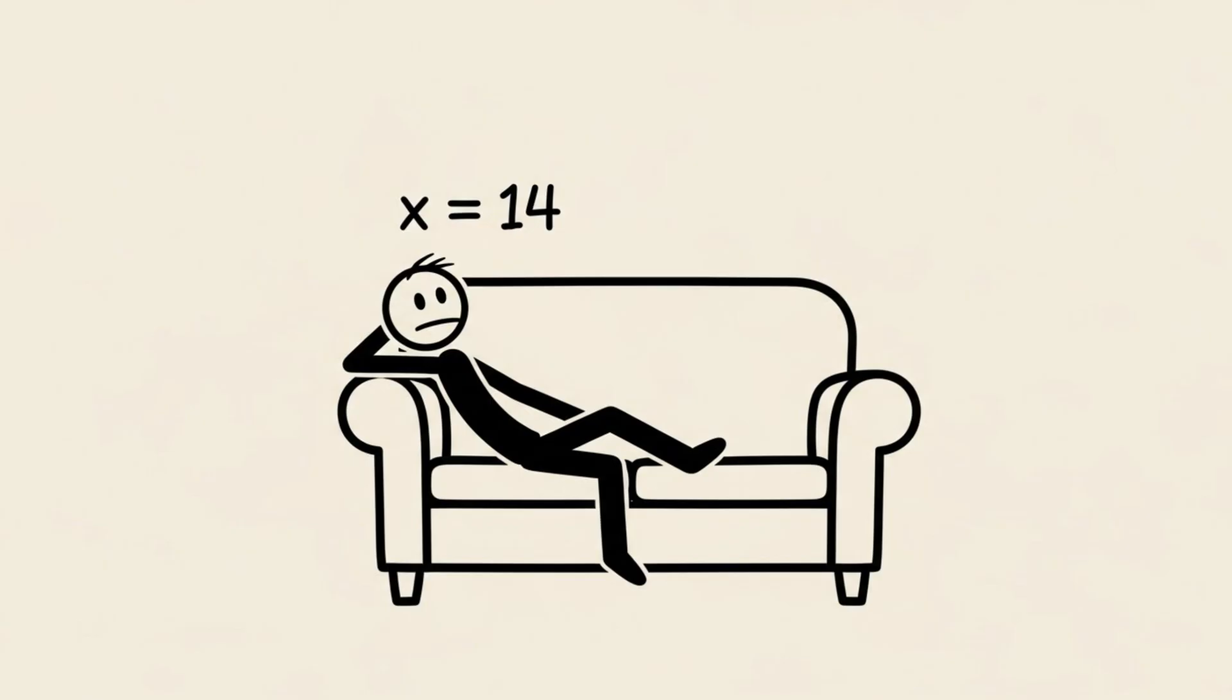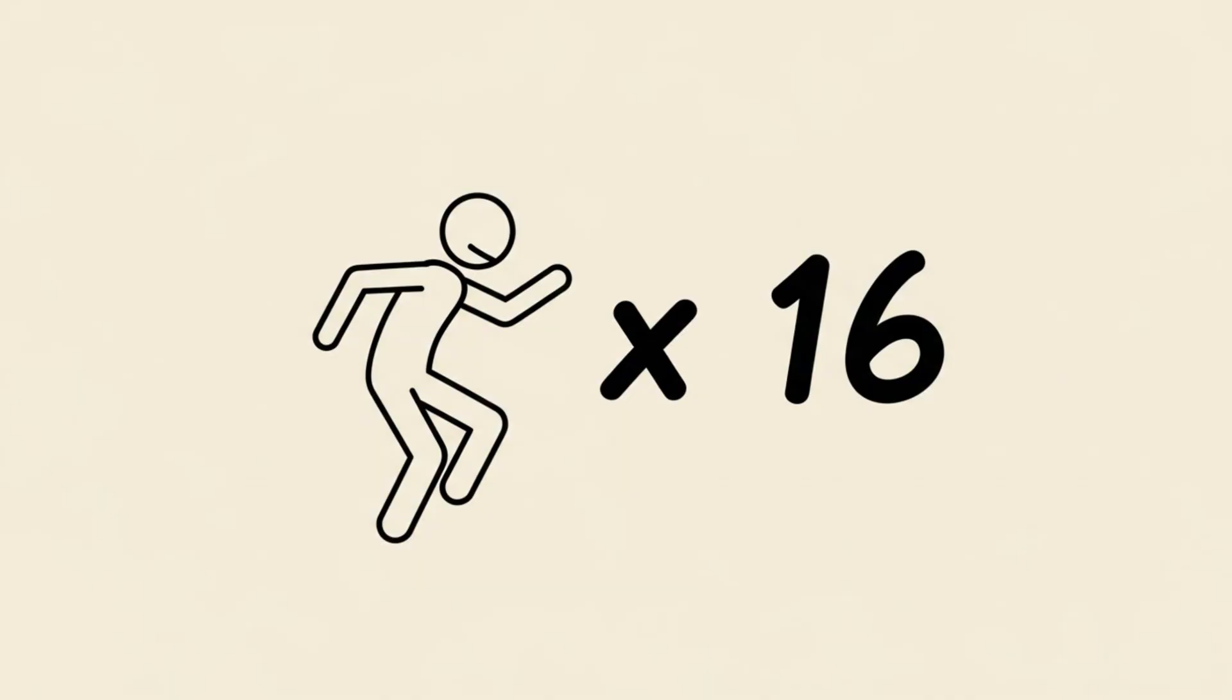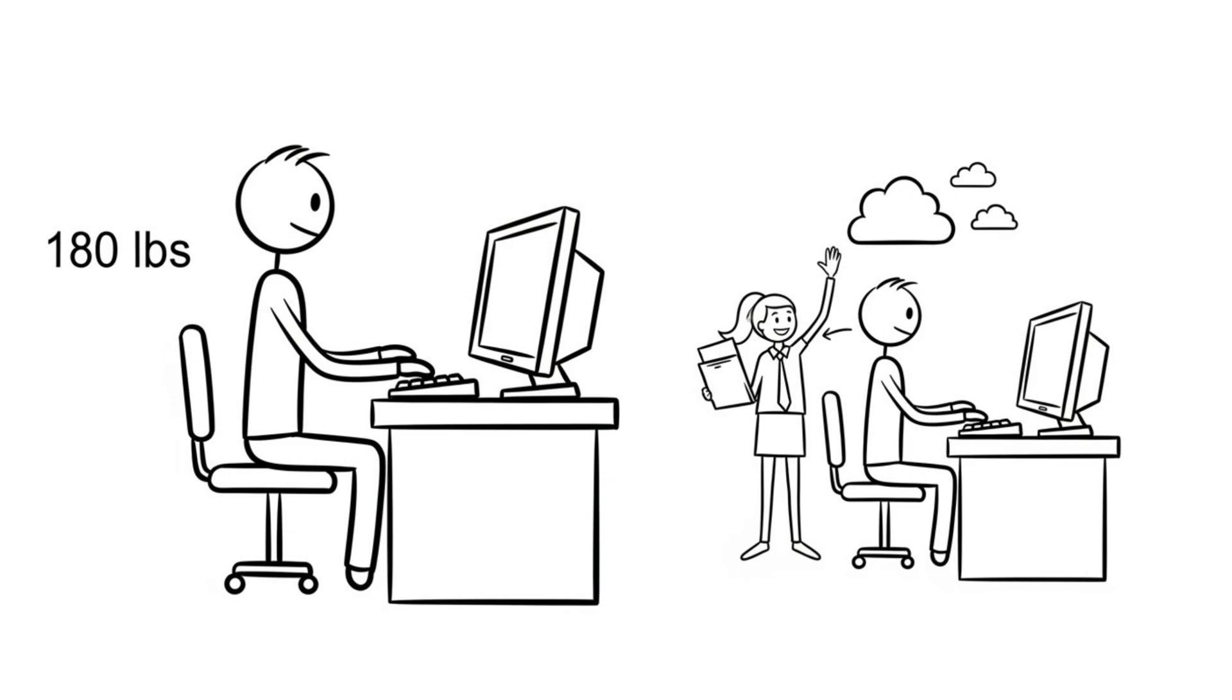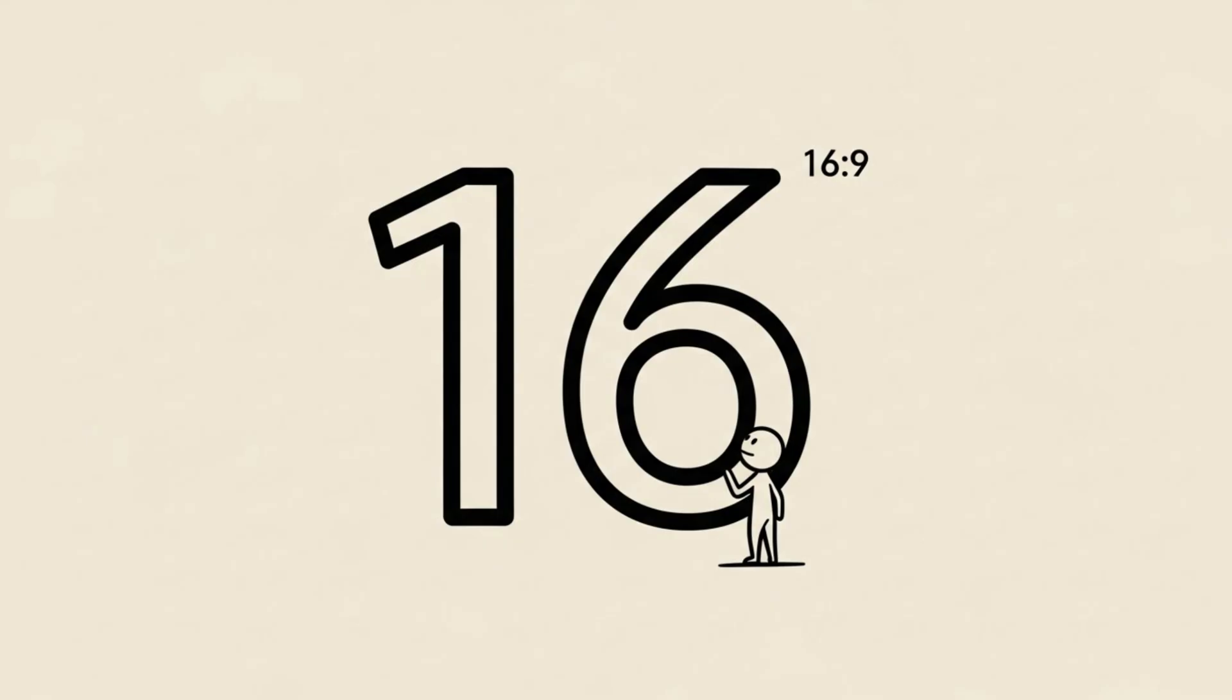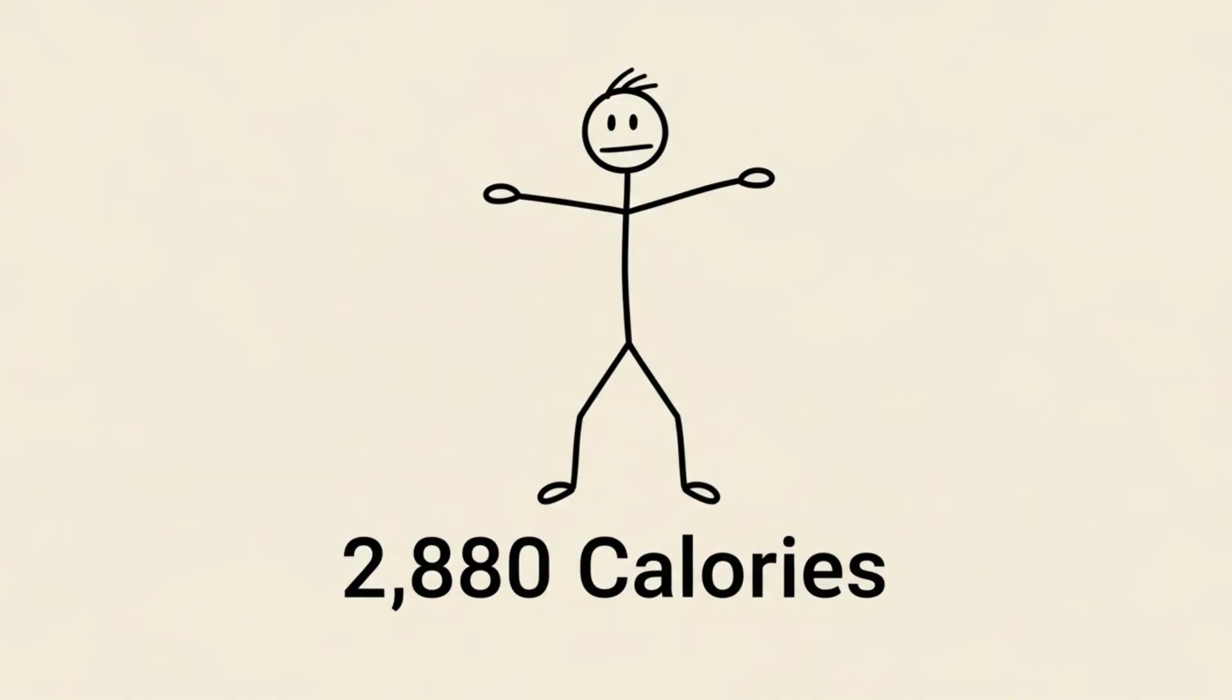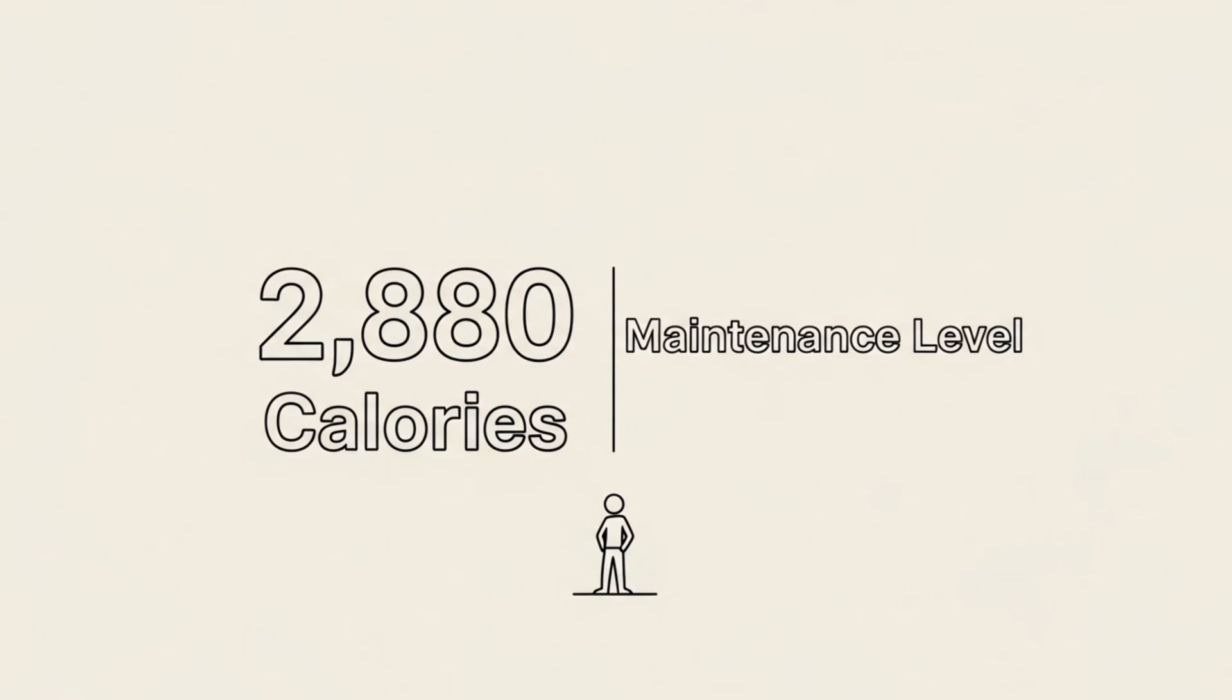If you are sedentary, multiply by 14. If you are very active, multiply by 16. Let's say you weigh 180 pounds and you work a desk job but lift weights a few times a week. We will use 16. That gives you 2,880 calories. That is your maintenance level.